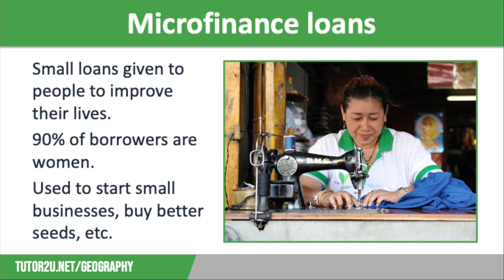These microfinance loans are used to start or improve small businesses — for example, small scale textile production. You can see an image on screen of a lady who has used her loan to buy a sewing machine to make garments to sell. Loans can also be used by farmers to buy better seeds and fertilisers to improve crop yields, providing them with a surplus they can sell at market, helping them move away from subsistence farming towards growing enough to provide them with an income.